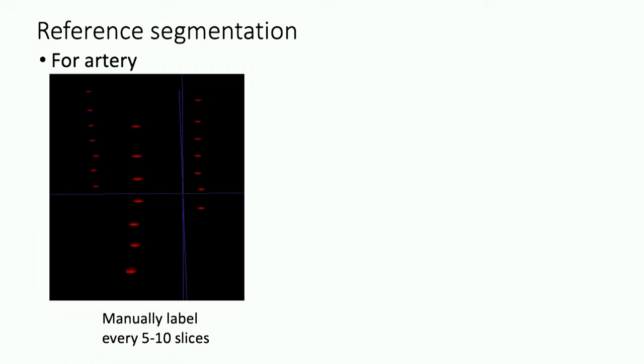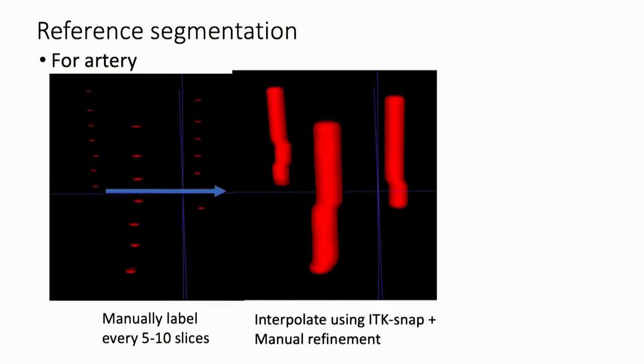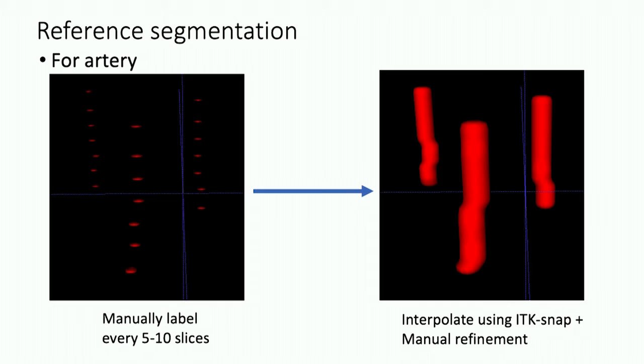In the step of reference segmentation, for artery, we manually labeled every 5 to 10 slices in the patient data, and then we use the interpolation function embedded in ITK SNAP software, as well as manual refinement to correct some mistakes caused by interpolation. We use this as the reference segmentation for artery.